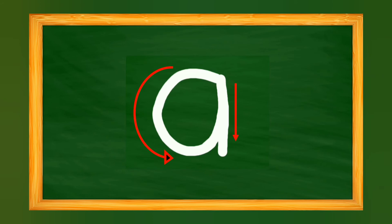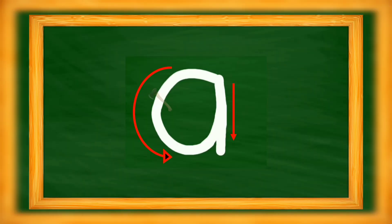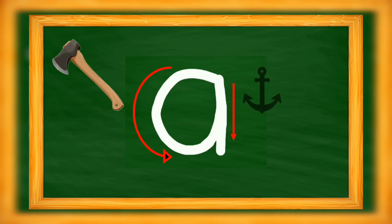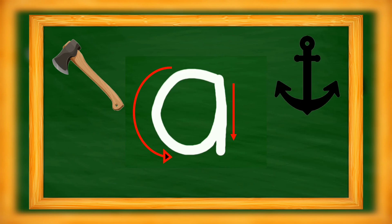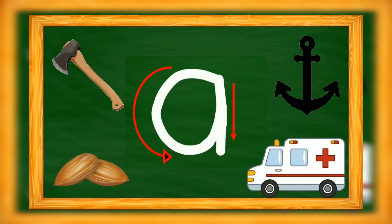We have learned our left curve, so we write a left curve — or C pattern — then go up and a standing line. This is small a. A says anchor, A says almonds, A says ambulance.